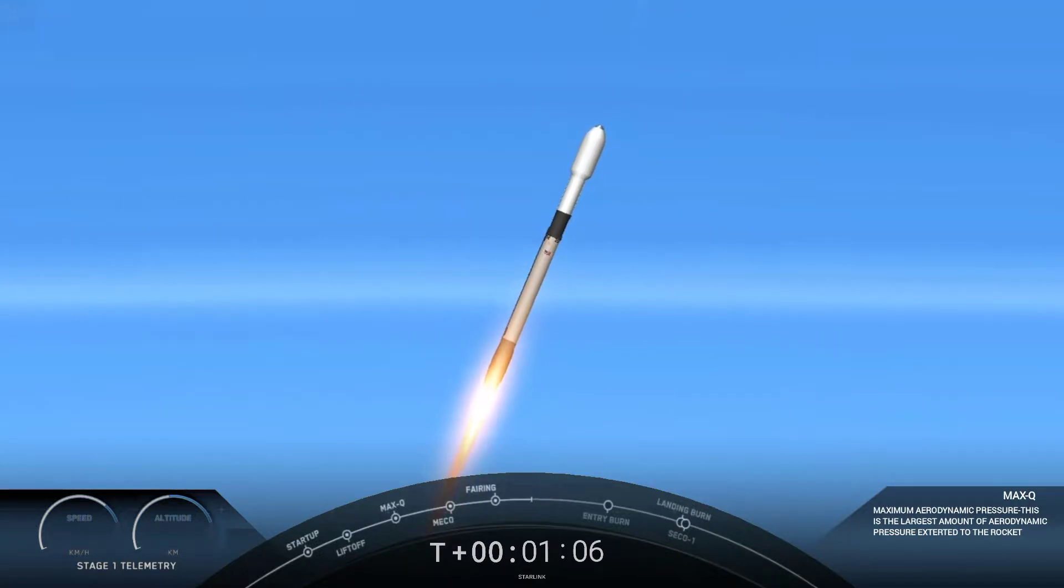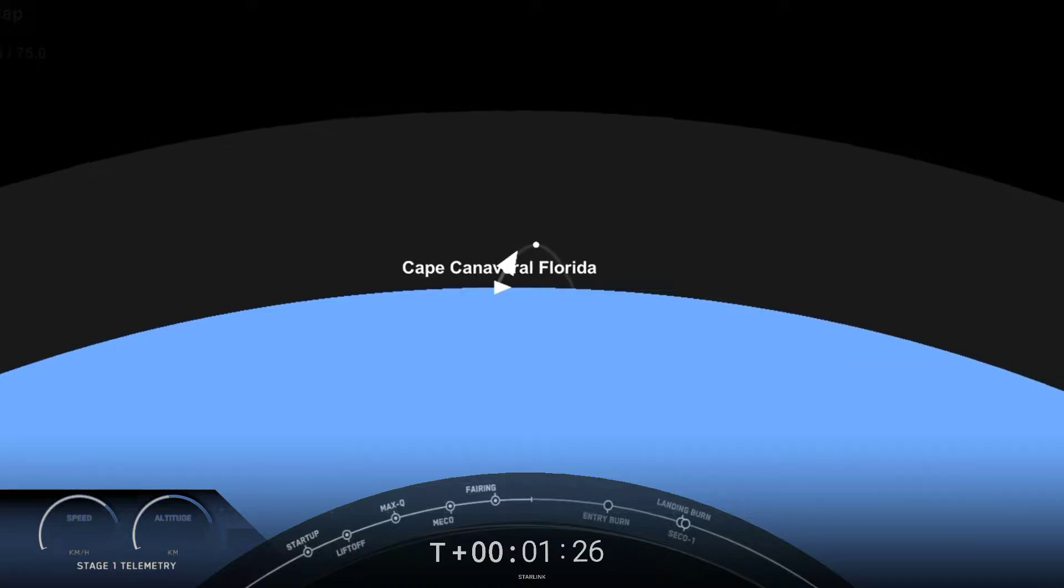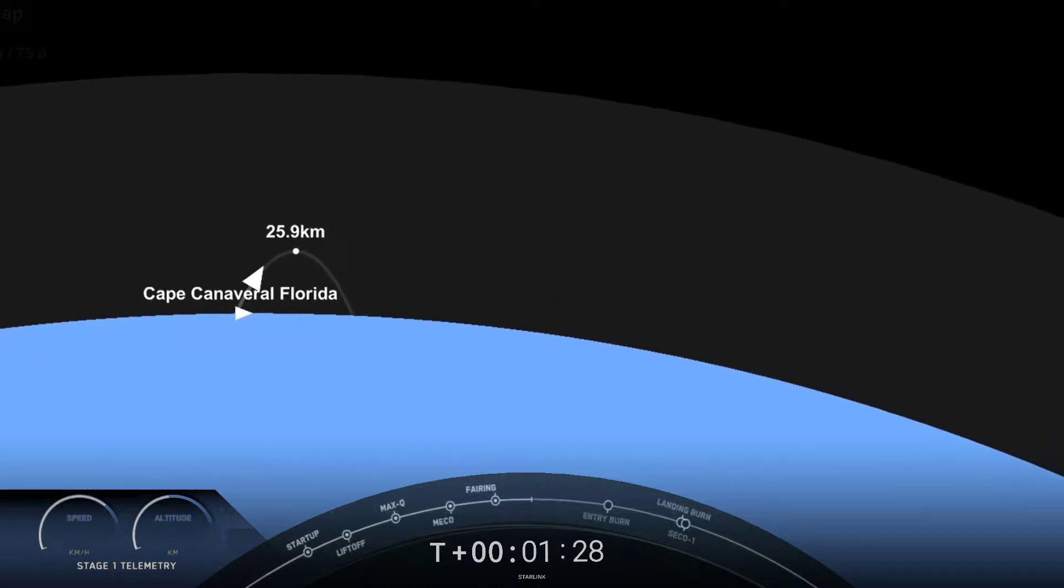And we are coming up on Max-Q here in a few seconds. Max-Q. And there's that call-out that we've just passed through Max-Q. That's the largest structural load that the vehicle sees on ascent, and we have passed through it. So next up will be a series of events.